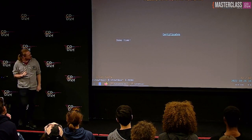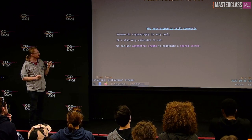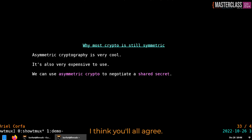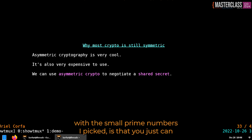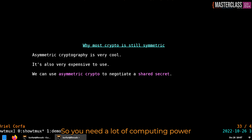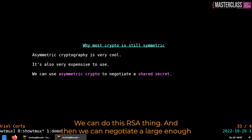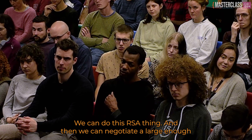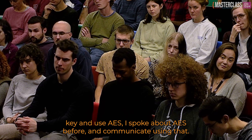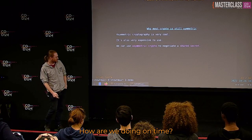Asymmetric cryptography is very cool but also fairly expensive to use. One problem with the small prime numbers in the demo is you can only send a tiny message before the modular arithmetic overflows. So we can use asymmetric crypto just to negotiate a shared secret — do this RSA thing — negotiate a large enough key, and then use AES for the actual communication. That's a very good hybrid approach that we still use in some cases.